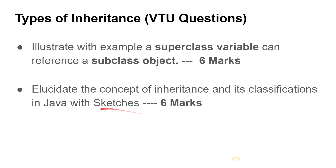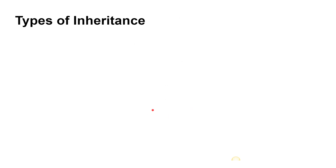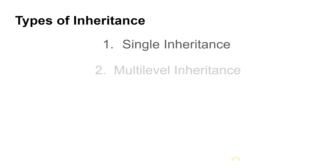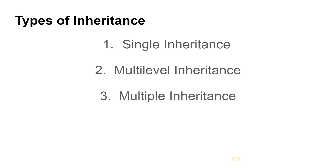We'll discuss about this now. The types of inheritance are: single inheritance, multi-level inheritance, multiple inheritance, and hybrid inheritance.